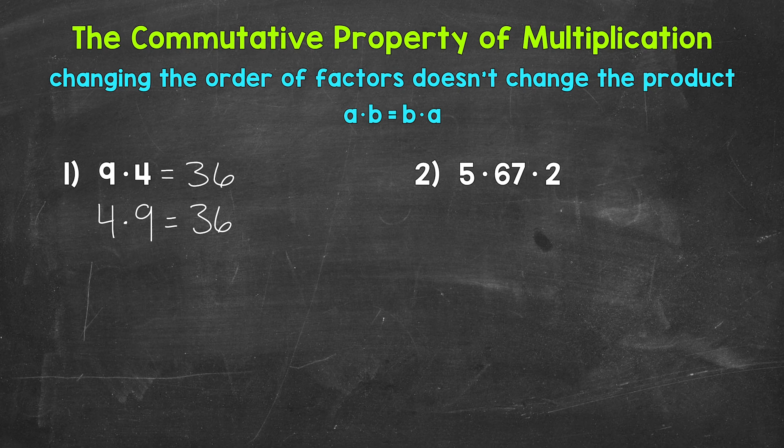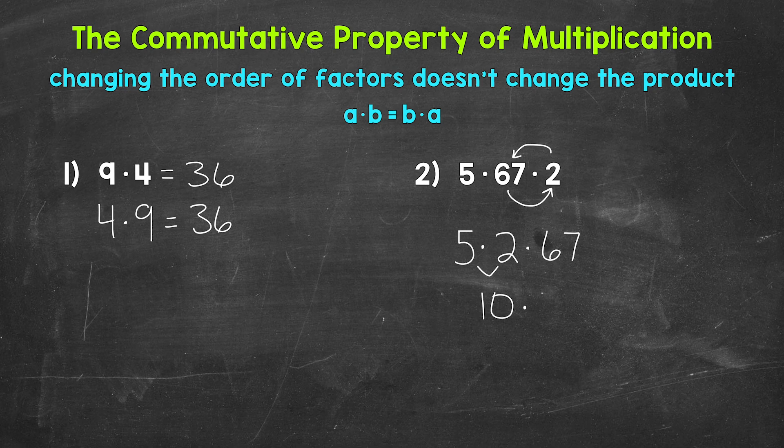So let's change the order here and switch the 2 and the 67, so we have 5 times 2 times 67. Now let's multiply, starting with 5 times 2, which equals 10. Bring down the multiplication sign and the 67. Now we have 10 times 67, which equals 670.